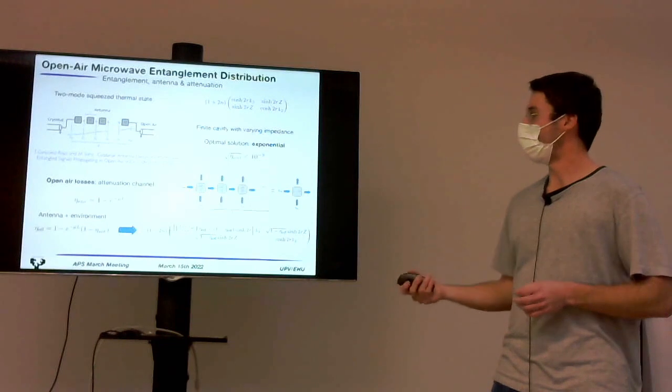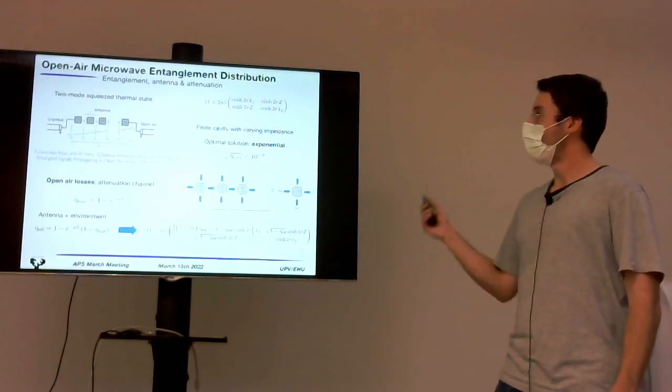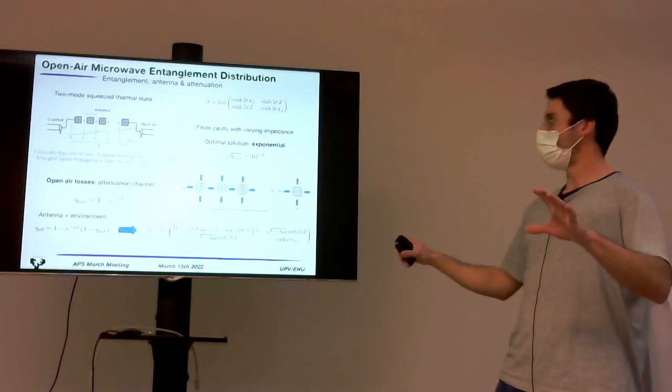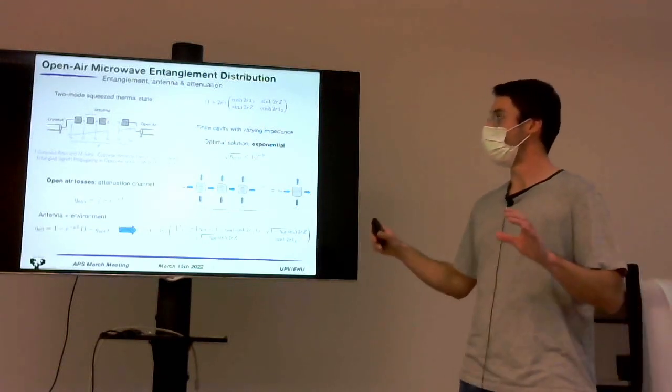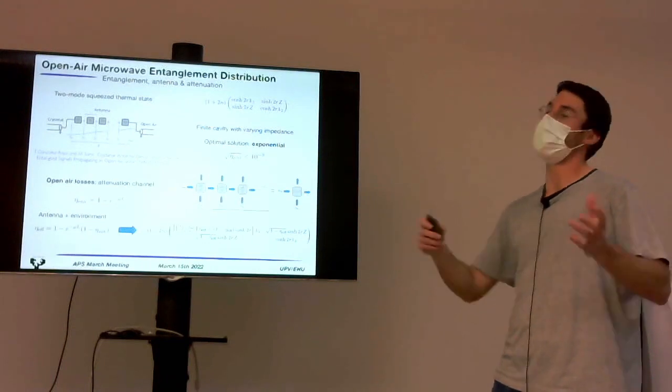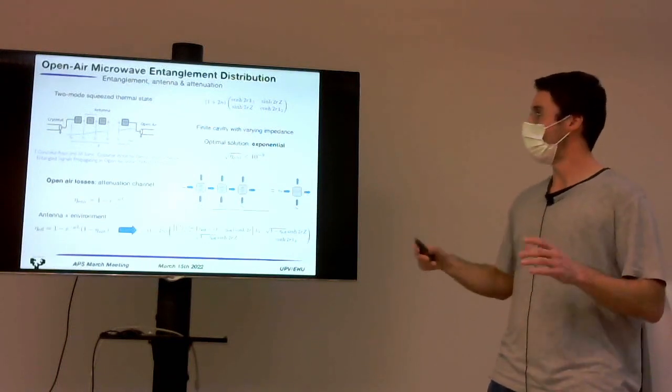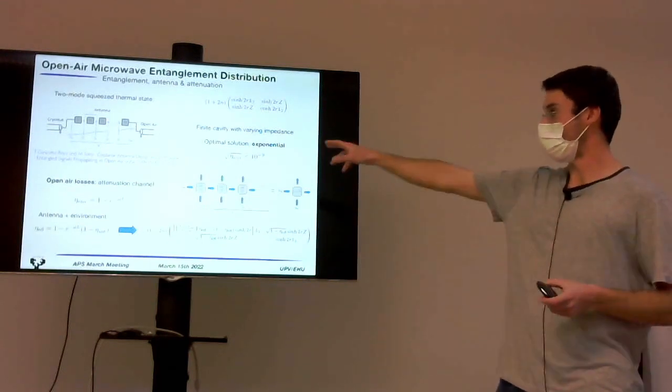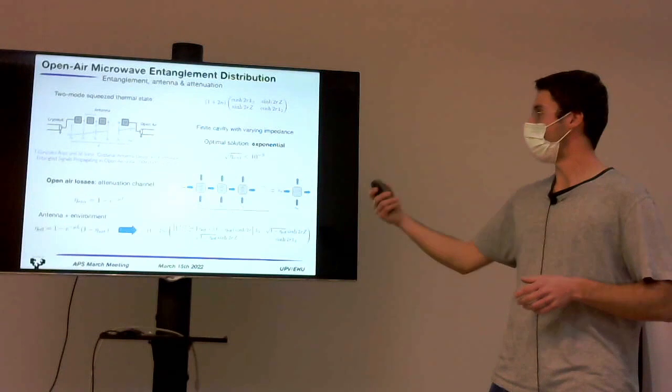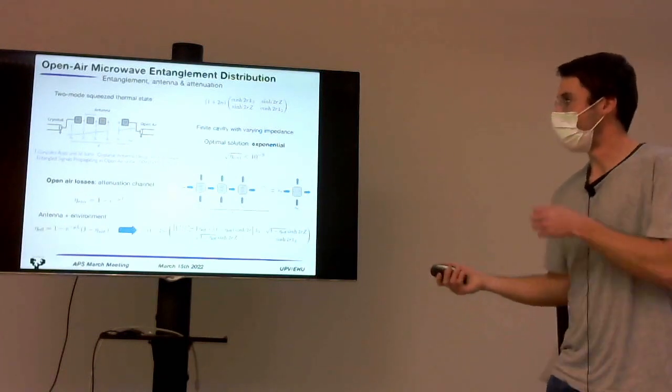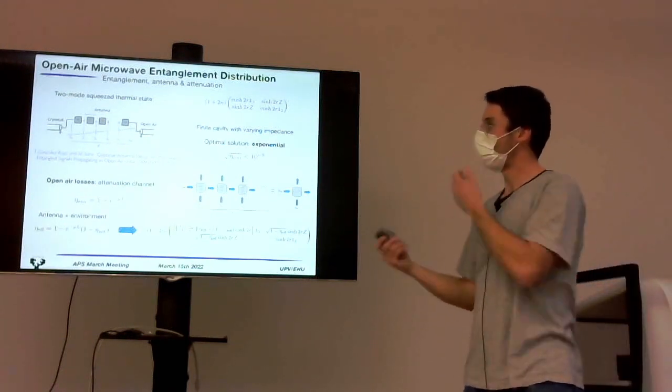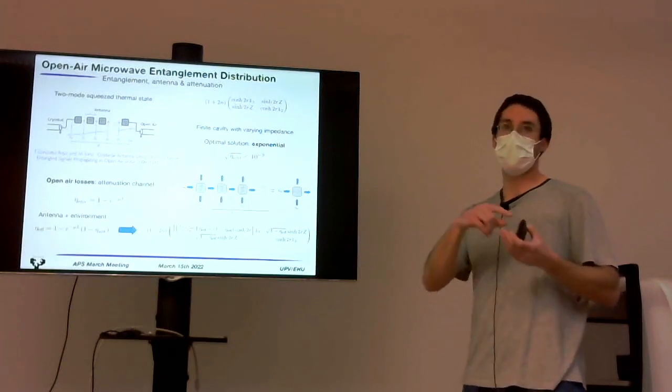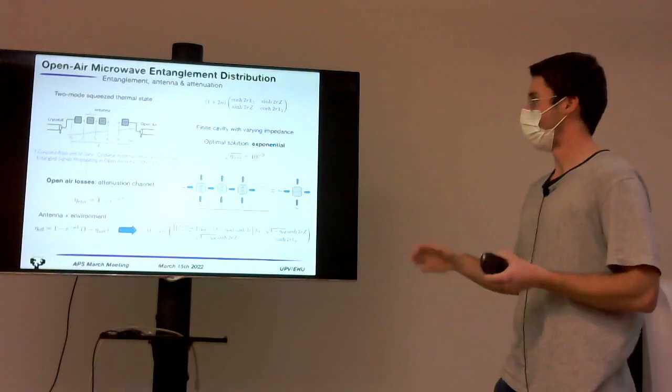But we want to study propagation in open air, and these two are very different mediums with very different associated impedances. So, the antenna here, which is based on this study that investigated a similar scenario, the antenna is basically an inhomogeneous medium with a changing impedance that does an impedance matching problem between the cryostat and the open air,